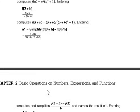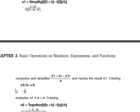Here you watch the simplification in Mathematica. We write n1 backslash dot h approaches to 0. This means evaluate n1 if h equals 0.